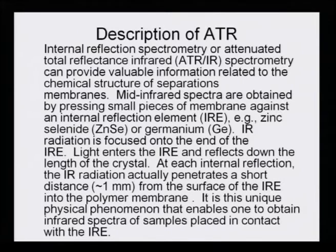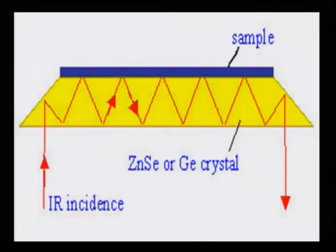At each internal reflection, the IR radiation actually penetrates a short distance — about 1 micrometer — from the surface of the IRE into the polymeric membrane or whatever surface material has been placed on top. This unique physical phenomenon enables one to obtain infrared spectra of samples placed in contact with the internal reflection element. Because of these small penetrations occurring at several intervals, the incident light finally comes out, producing enough vibration in the bonds of the material placed on top of the IRE.